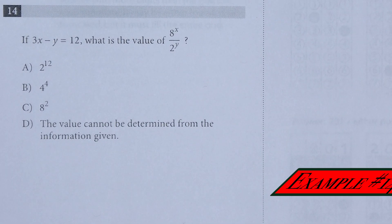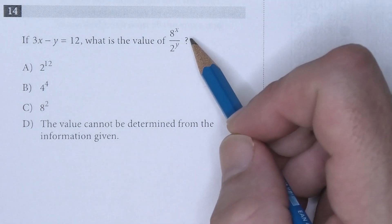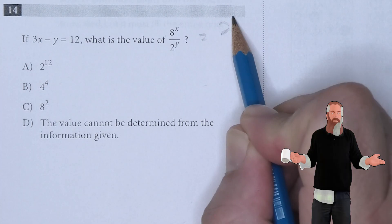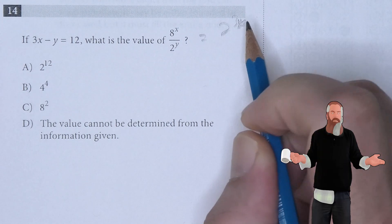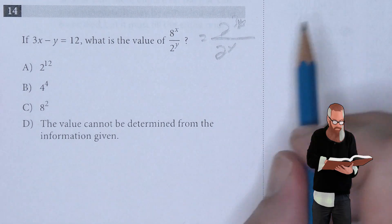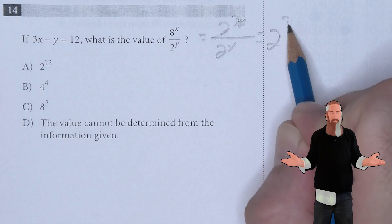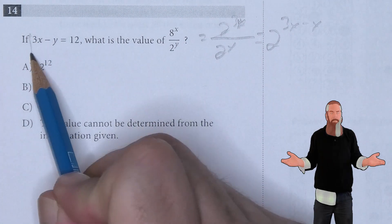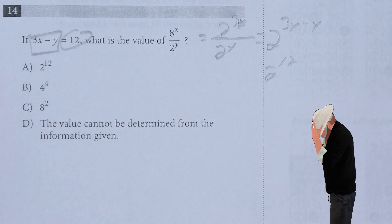If 3x minus y equals 12, what is the value of 8 to the x divided by 2 to the y? Recognizing that 8 is 2 cubed raised to the x power gives 2 to the 3x. Dividing by 2 to the y means we have 2 to the 3x minus y. Since 3x minus y equals 12, we get 2 to the 12 power, which is A.